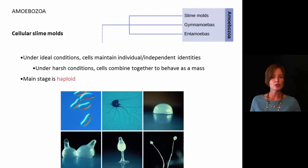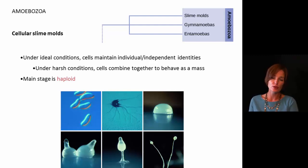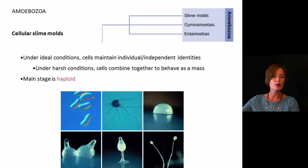When conditions become very harsh or when there are not many nutrients available, the cells are going to combine together and work together to survive. With these, the main stage is going to be haploid — most of the nuclei we see have only one set of chromosomes. That is a major distinguishing characteristic: plasmodial slime molds are primarily diploid, and cellular slime molds are primarily haploid.